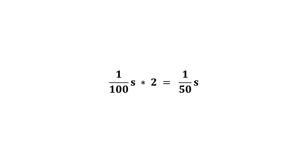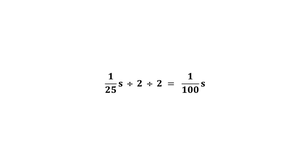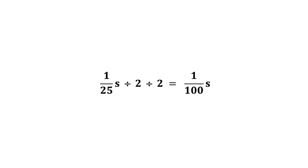Shutter speed measures the length of time the sensor is exposed to light. So if we double the amount of time that the shutter stays open, we also double the amount of light, effectively increasing the exposure by one stop of light. If our shutter speed is 1/100th of a second, we can double the light by multiplying by 2, which gives us 1/50th of a second. This means that the shutter is open for twice as long and our exposure increases by one stop. And if we speed up our shutter from 1/25th of a second to 1/100th of a second, we have decreased the amount of light by two stops because we have halved our light twice.